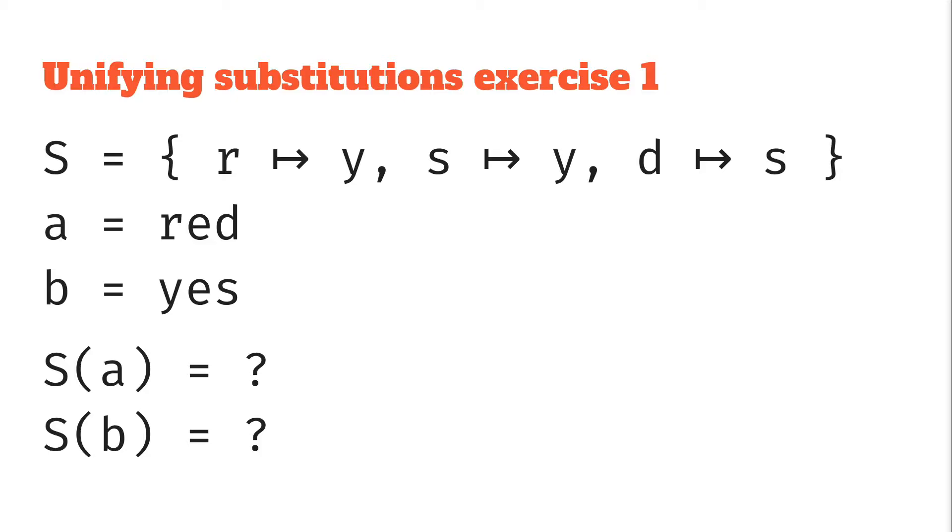Well when we apply it to A, that's applying it to red, where we've got the R goes to Y, the D goes to S, and so we end up with the string yes. When we apply it to B, well we've got the S goes to Y and we end up with a string yay, so actually these are different. S of A is not equal to S of B, so here capital S is not a unifying substitution of A and B.